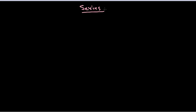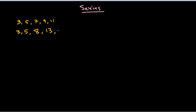A series is a segment or set of values — numbers, actually. For example, numbers like 3, 5, 7, 9, 11, and so on form a kind of series. Another example: 3, 5, 8, 13, 21 — this is also a series. So these are some collections of numbers that we call a series.